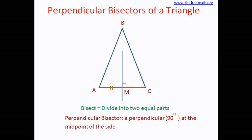Now AC is one of the three sides of this triangle. What are the other sides? Side CB. So if you consider side CB, the perpendicular bisector of side CB would be like this. And there is one more side, which is side AB. So if you think of a perpendicular bisector of the side AB, it will look like this. Now that we have all three perpendicular bisectors.